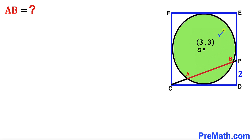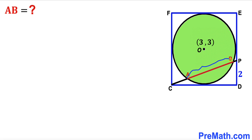In this video we have a green shaded circle fully inscribed in a blue square CDEF, such that the diagonal line CP passes through this green circle. As a result, AB is the chord. The center O of this circle is at (3, 3), the segment length PD is 2 units, and our task is to find the value of chord length AB.